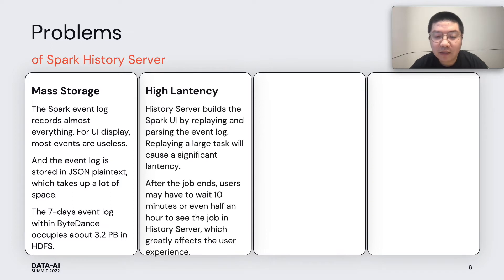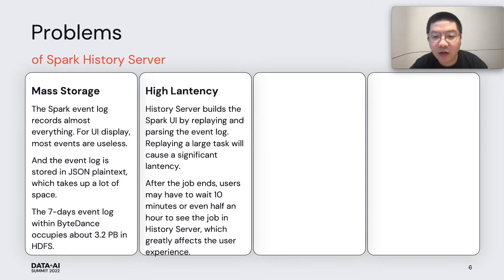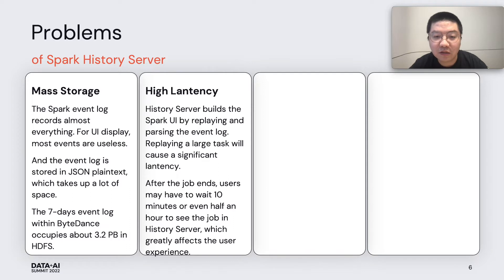High latency of UI rendering is the second problem. The latency refers to the duration from when a user initiates a UI access request to when the page is fully rendered. Since replaying compressed JSON format event log files is CPU-bound, when a large application ends, the user may have to wait over 10 minutes to see the job history.